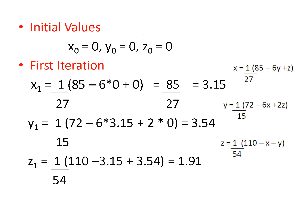The technique used is the iteration method. Set initial values x0 = 0, y0 = 0, and z0 = 0. For the first iteration, x1 is found using: x = (1/27)(85 − 6y + z). Substituting y = 0 and z = 0 gives x1 = 3.15.